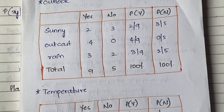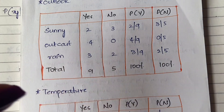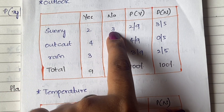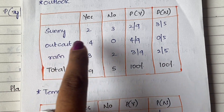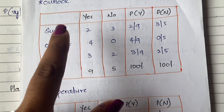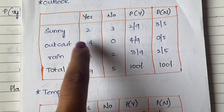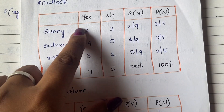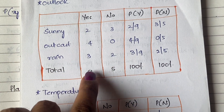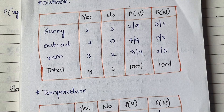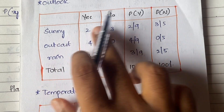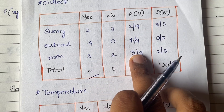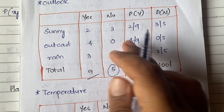Let's draw the table for outlook. If it is sunny, the player will enjoy the game 2 times and not enjoy 3 times. If the outlook is overcast, the player will enjoy 4 times and not enjoy 0 times. If it is raining, the player will enjoy 3 times and not enjoy 2 times. Adding these up: total yes = 9, total no = 5.